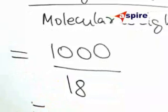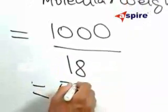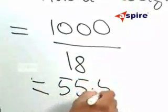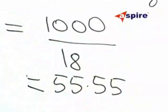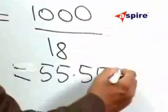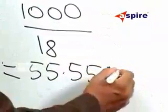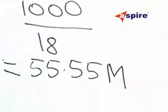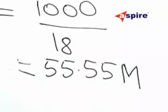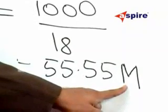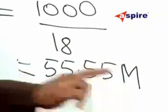If you simplify this, you will get a value of 55.55. The unit for molarity is capital M, so molarity is indicated by writing capital M after this number.